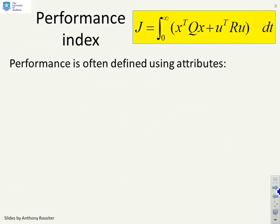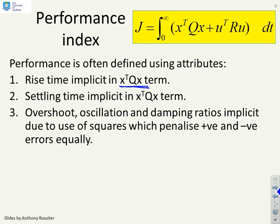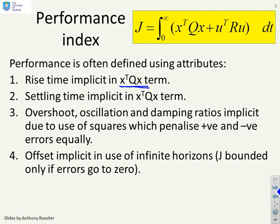Here's a summary. The attributes we might be interested in are things like rise time, and that's implicitly covered in the x transpose Qx term. Settling time is also implicit. Overshoot, oscillation, and damping are also implicit in this same term because we've used squares. Positive errors and negative errors are penalized equally, so any oscillation is implicitly penalized.